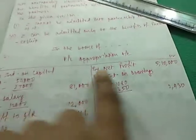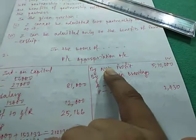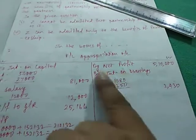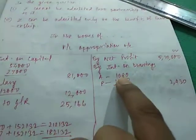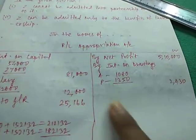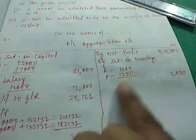First of all, we will write the net profit here on the PL appropriation account credit side. Net profit is 510,000. Next is interest on drawings 1080 and 1350 for A and P respectively. Now, how we got this interest on drawings, let us check this.